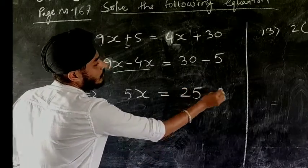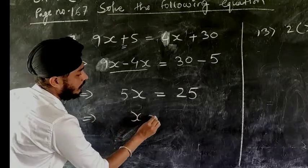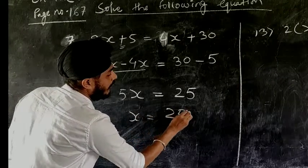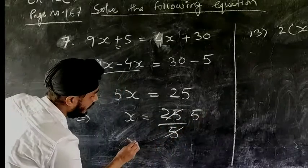Will be 25. Now the last step: x equal to 25 by 5, so 5 fives are 25, so the value of x comes to 5. So this way this sum is done.